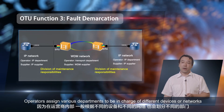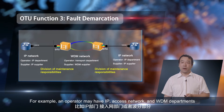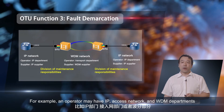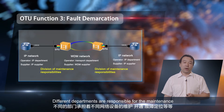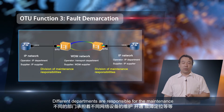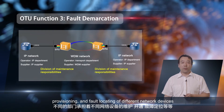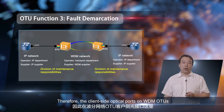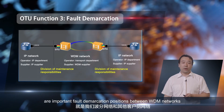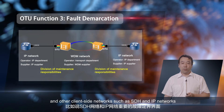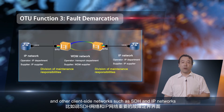Operators assign various departments to be in charge of different devices or networks. For example, an operator may have IP, access network, and WDM departments. Different departments are responsible for the maintenance, provisioning, and fault locating of different network devices. Therefore, the client-side optical ports on WDM OTUs are important fault demarcation positions between WDM networks and other client-side networks, such as SDH and IP networks.